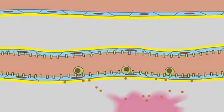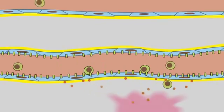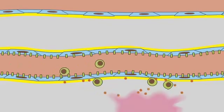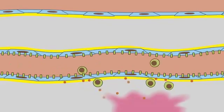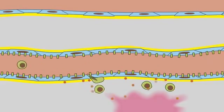There, they adhere tightly and squeeze between endothelial cells without disrupting the vessel walls, then crawl out of the blood vessel into the adjacent connective tissue.